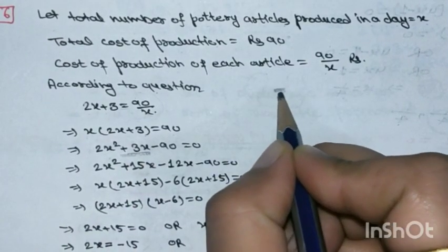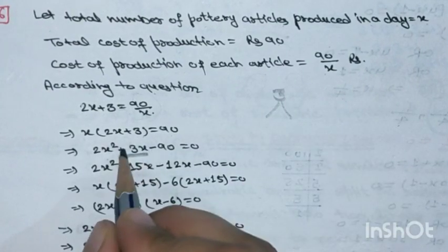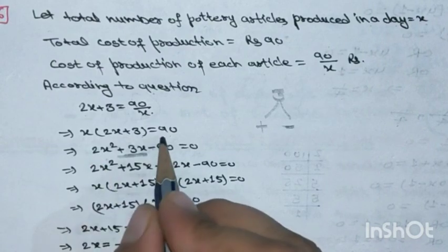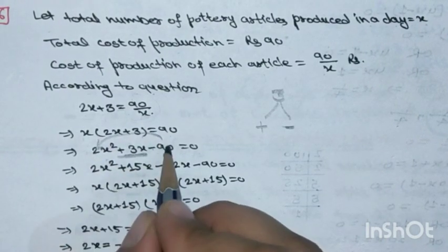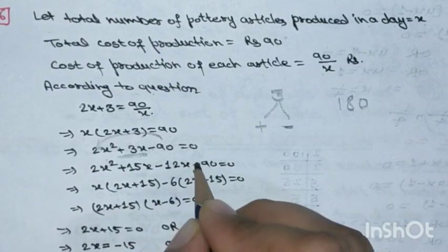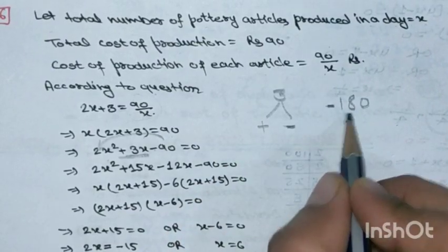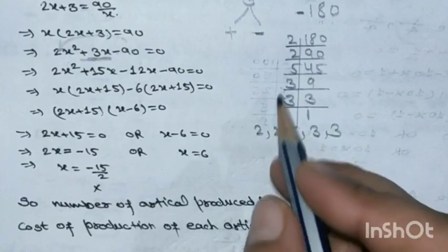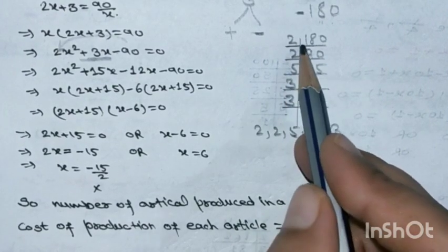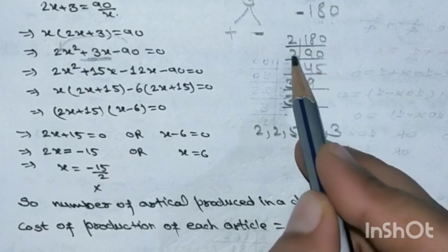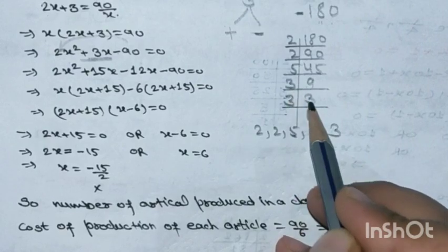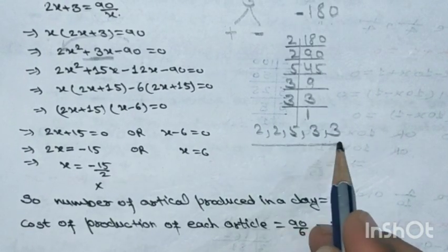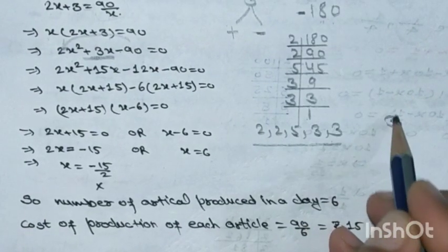To solve 2x² + 3x - 90 = 0, we need to split 3x into two parts. Since middle term is positive and last term is negative, one factor is positive and one is negative. Multiply coefficient of x² by constant: 2 × 90 = 180. Factorize 180: 2 × 2 × 3 × 3 × 5. Try factors: 15 and 12 — 15 - 12 = 3 ✓, and 15 × 12 = 180 ✓. So split +3x as +15x - 12x.